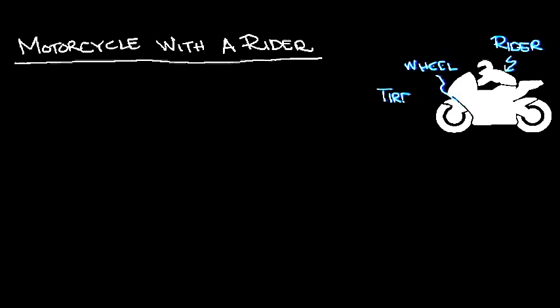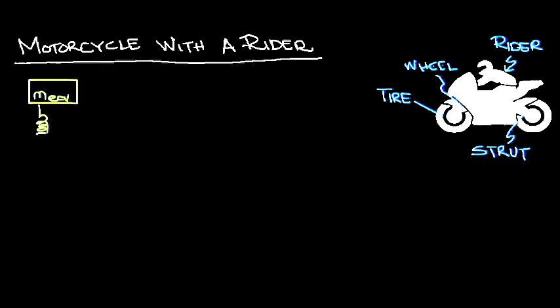We start with the simplest model and will then refine it gradually. When the equivalent values of the mass, stiffness, and damping are known, we obtain a single degree of freedom model of the motorcycle with a rider as shown.